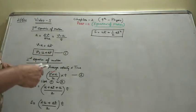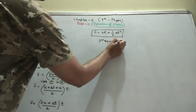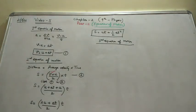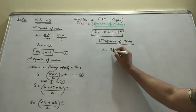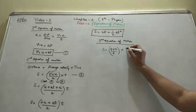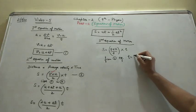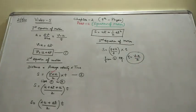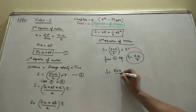Now for the third equation of motion. Again, s is equal to average velocity into time. From the first equation, time can be written as (V minus U) upon a. We use this here, so s is equal to (V plus U) upon 2 into (V minus U) upon a.